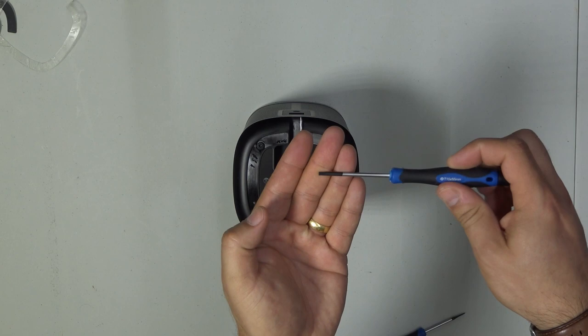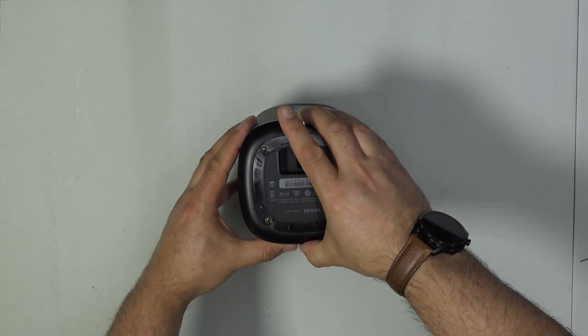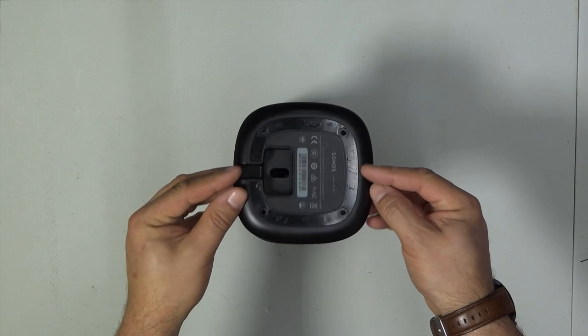Working our way through systematically, we can then pop the base off and the base literally can just get put to one side. We will be drilling a hole in that a little bit later right by that mains connector.